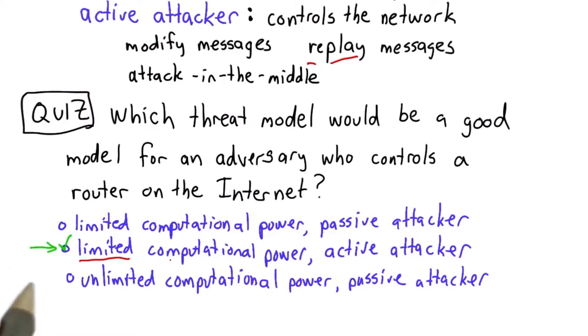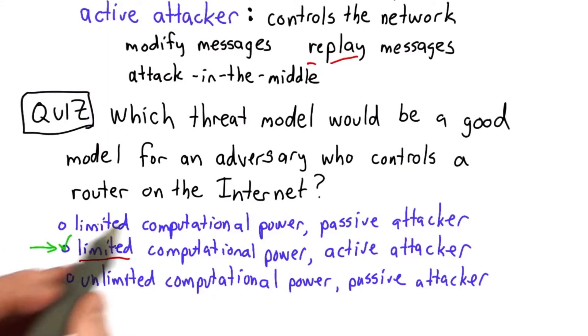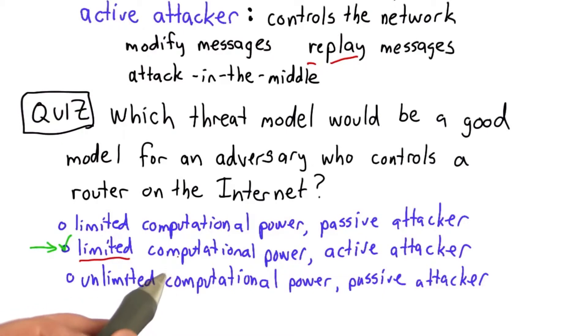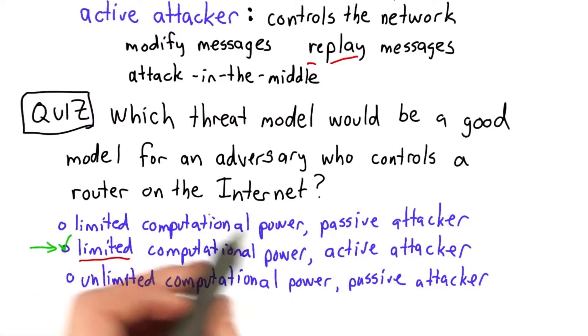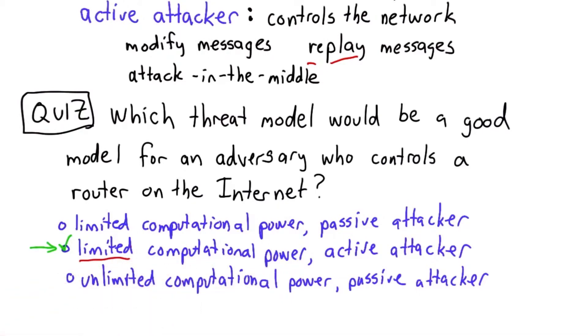But when we design protocols, we usually don't need to pick a particular encryption algorithm. We're going to assume that we have one that is either a symmetric or an asymmetric encryption function that has the properties it should have.